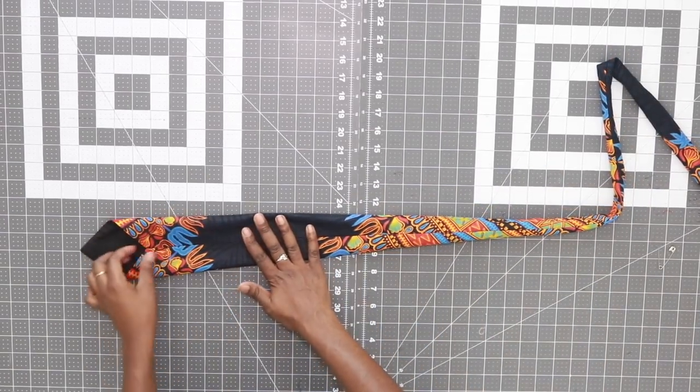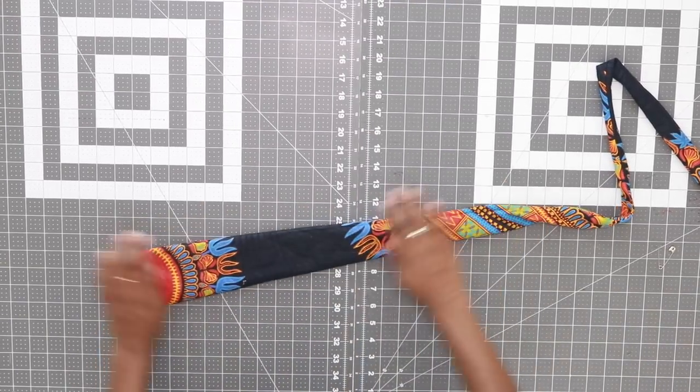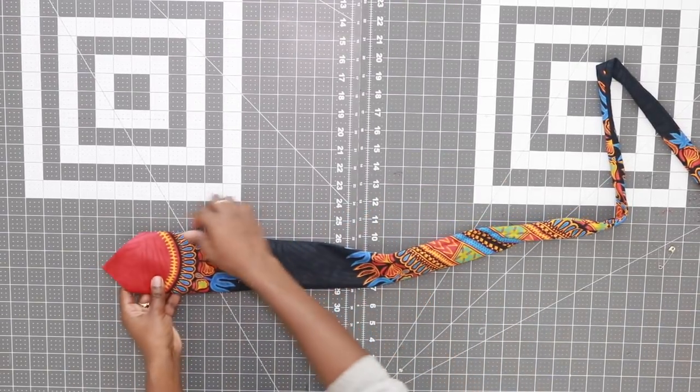As soon as you see the safety pin coming out on the other side, go ahead and take it off. And then just by hand, pull the rest of the tie through. Next go ahead and make sure that your seam is nicely centered and you want to give this a nice press on both sides.